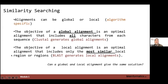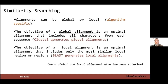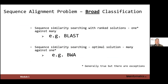Where are we in the workflow? We're getting ready to do the alignment. The computational problem is one of similarity searching. We can think about alignments in two main ways: global alignment, which tries to find the optimal alignment including all characters from the sequence — ClustalW is an example — and local alignment, which finds the optimal alignment including only the most similar local region or regions within a sequence string. BLAST and BWA are examples of local aligners.